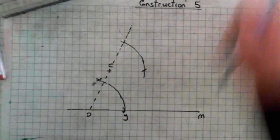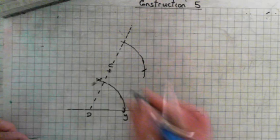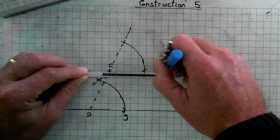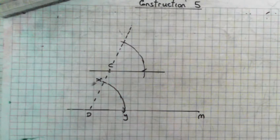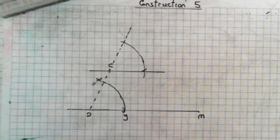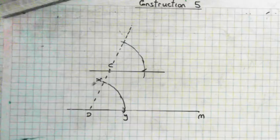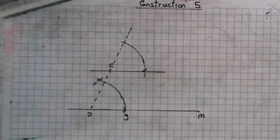And all we need now is a straight edge. Join the point C to this point here, and those two lines are parallel. All right, did you see that? Was that clear enough? Okay, construction five.